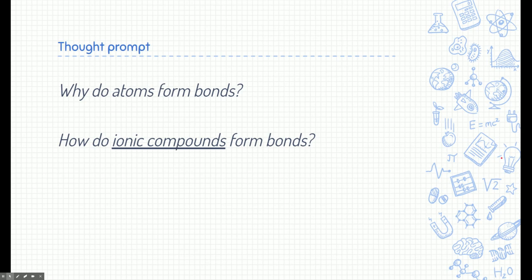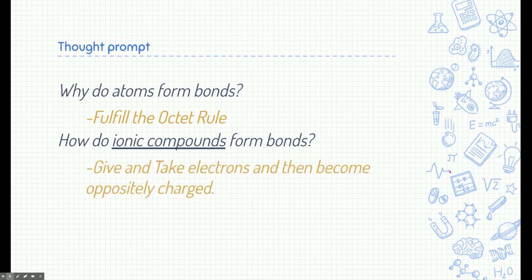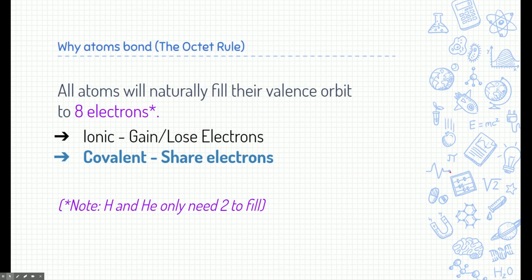I hope so. That's the best way to learn is to go back and review and try to remember yourself. Let's start with why do atoms form bonds? Well, the simple answer is to fulfill the octet rule. Now how about ionic compounds? How do they form bonds? Well, what they do is they give and take electrons from each other and then they become oppositely charged. And that's why they form bonds or how they form bonds by fulfilling the octet rule, becoming charged and sticking with one another.